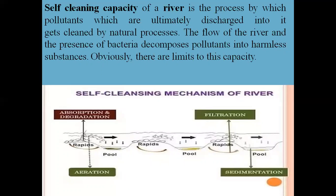Self-cleaning capacity of a river: this is the process by which pollutants discharged into a river are cleaned by natural processes. The flow of the river and the presence of bacteria decompose pollutants into harmless substances. Obviously, there are limits to this capacity. The self-cleaning mechanism involves rapids aeration, absorption and degradation, and filtration in pools below the ground surface, as well as sedimentation.